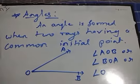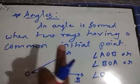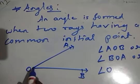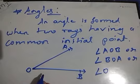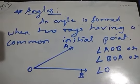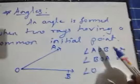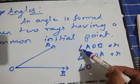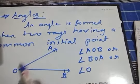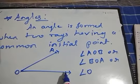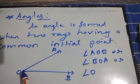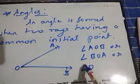Next is angles. An angle is formed when two rays have a common initial point. See here, two rays have one common initial point, so in this way an angle can be formed. Students are given names A, O, and B. To name this angle, we can write angle AOB. Or we can name it angle BOA. Or, using just the vertex letter, we can name it angle O.